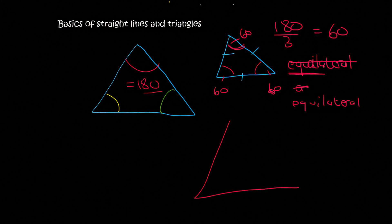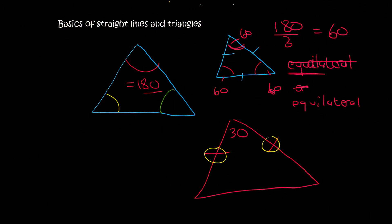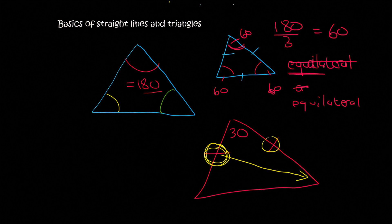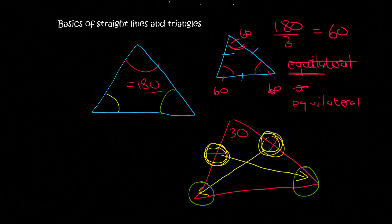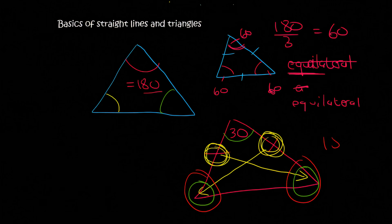Then we get a type of triangle where two of the lengths are the same. If two of the sides are the same, then two of the angles are the same. But which two angles? It's the two angles that are opposite those sides. So this side is opposite that angle, and this side is opposite that angle — so those two angles are the same. Now, if this angle is 30, then together this one and this one should be 150.